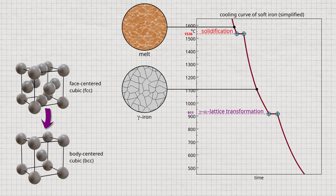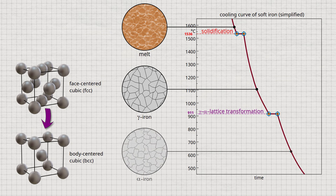Below 911 degrees Celsius, the structure does not change anymore. In this body-centered cubic form, the microstructure of soft iron is also called alpha iron. The transformation of the lattice structure is therefore also called gamma-alpha transformation.